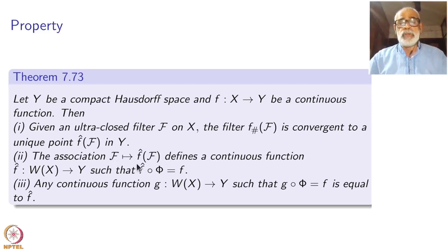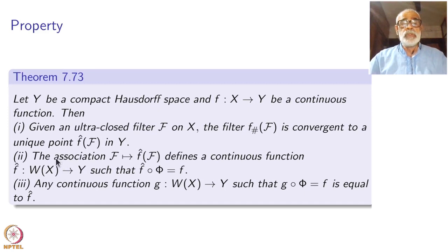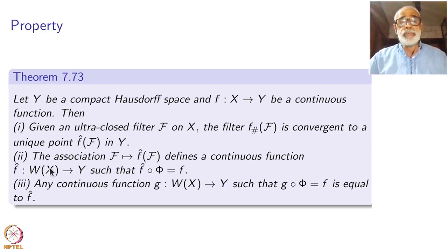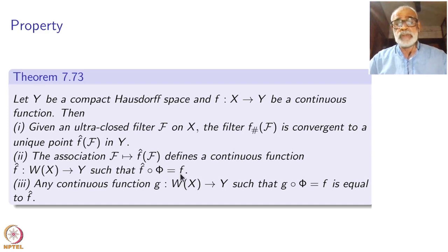The association F going to f-hat of F, which we have just defined because of the uniqueness of convergence of f-check of F, is a continuous function from the space of all ultra-closed filters — the Wallman Compactification — to the given compact Hausdorff space. It has the property that f-hat composed with phi is identically f, the original function. Think of phi as an inclusion map of x inside Wx; f-hat is nothing but the extension of f.